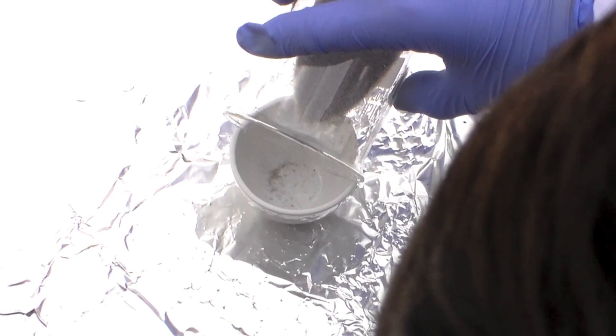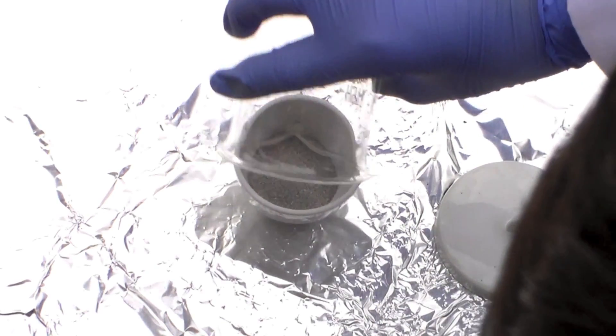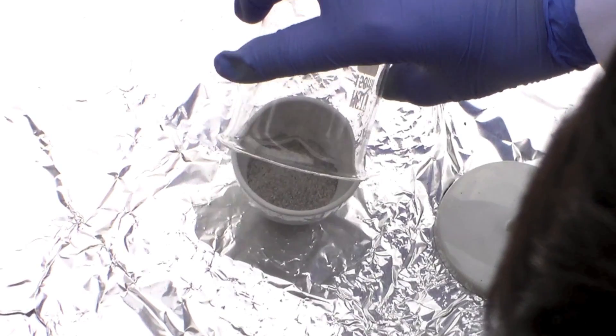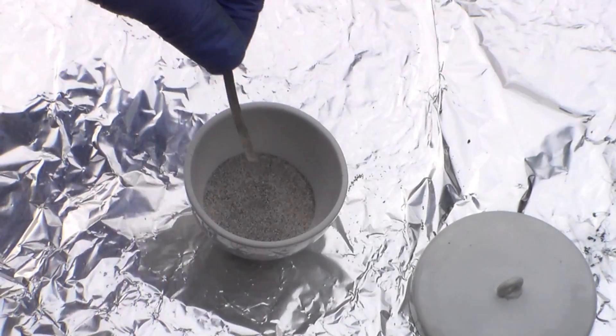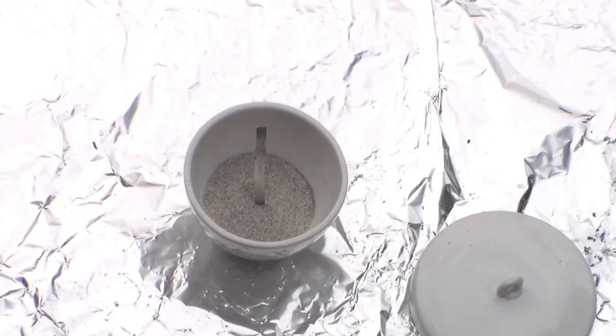I didn't want to use a test tube because I can't afford to break one, but this crucible will easily be able to withstand the heat produced in the reaction. Alright, so I'm going to stick a magnesium ribbon in this thing and see if it ignites.